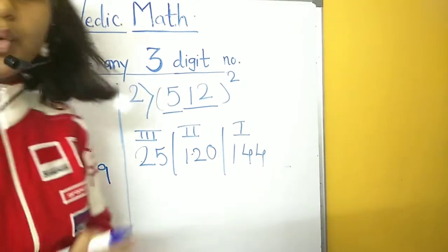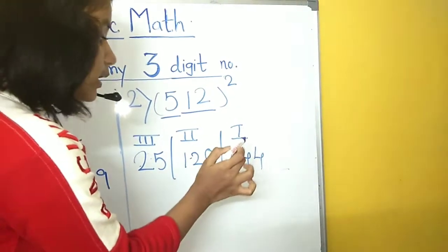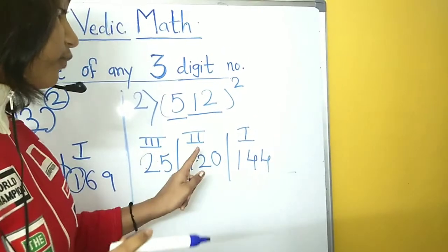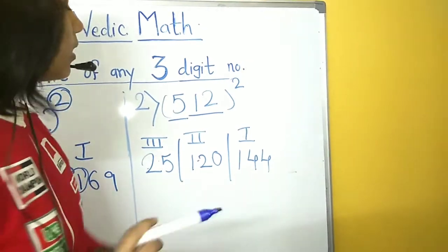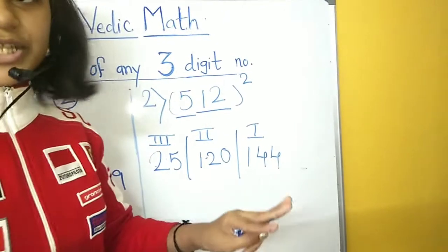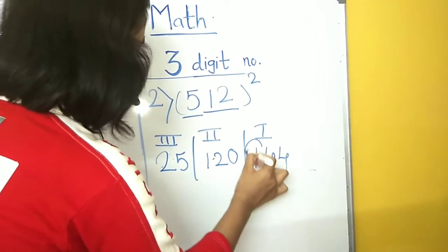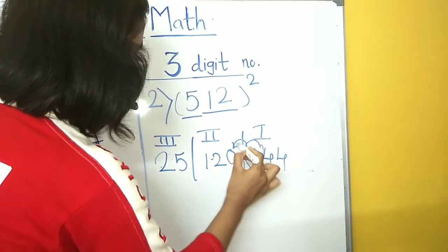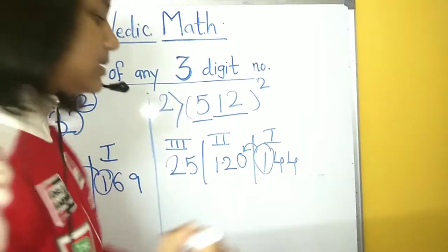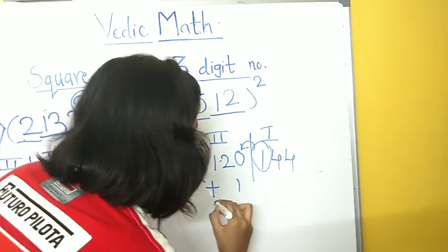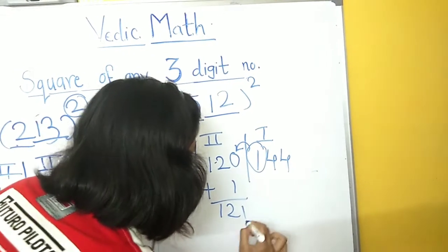Now, the rule is, we need to have only two digit numbers in the first and the second steps. But, here, we have three digit number. So, we will carry forward it. We will carry forward it to the units place. So, let's add one, which will be 121.